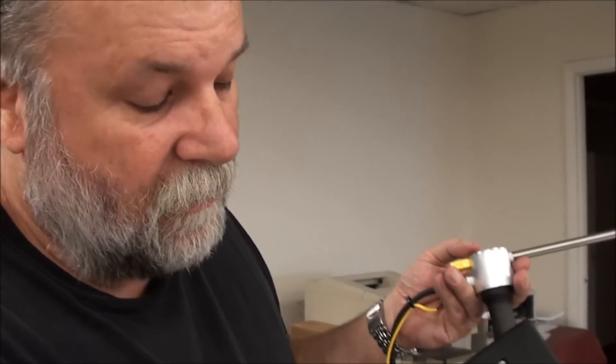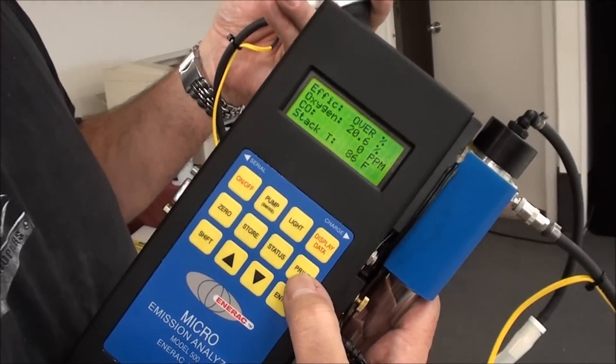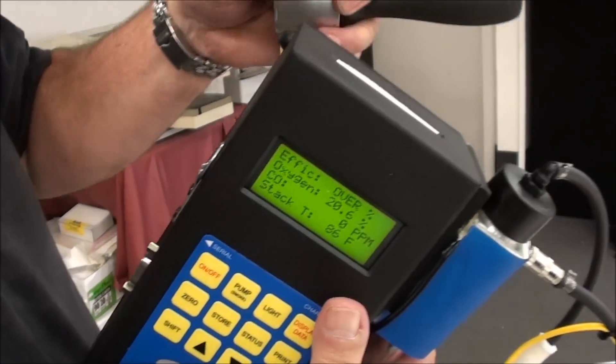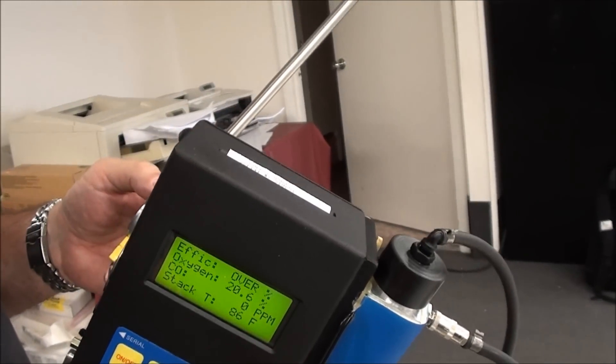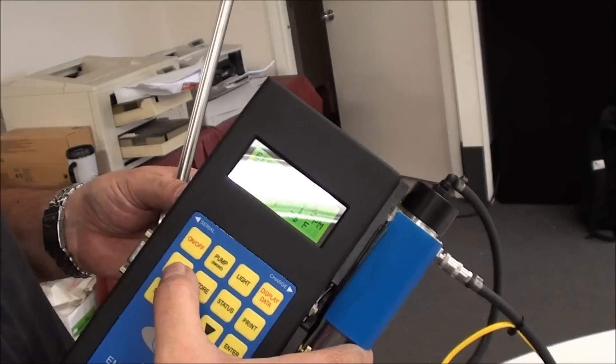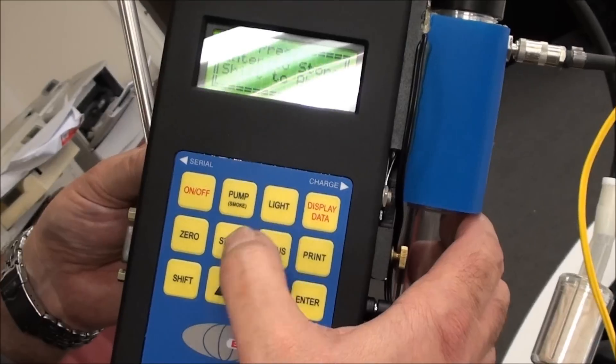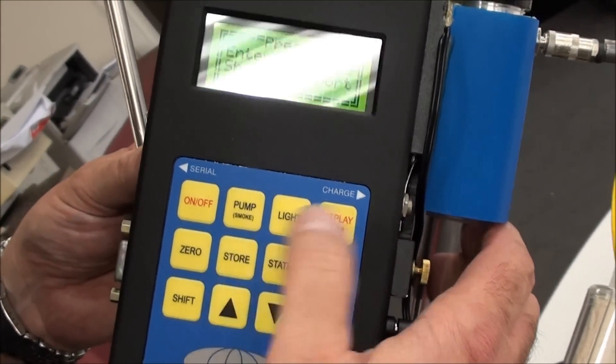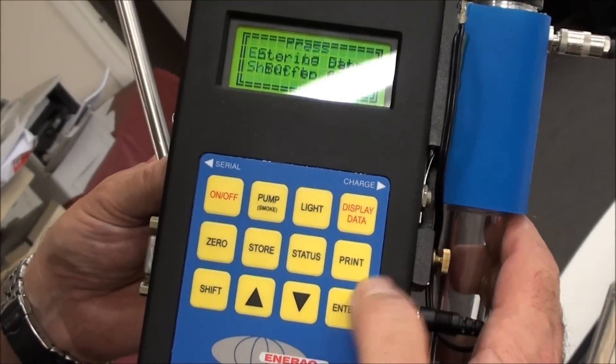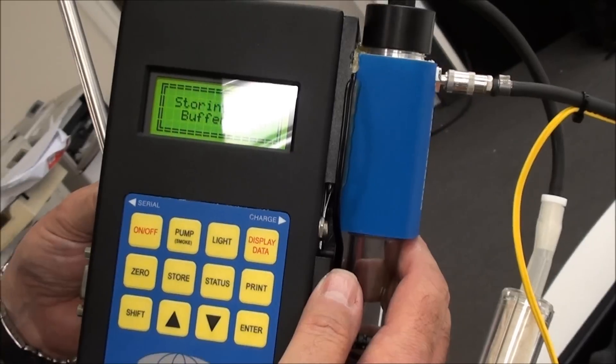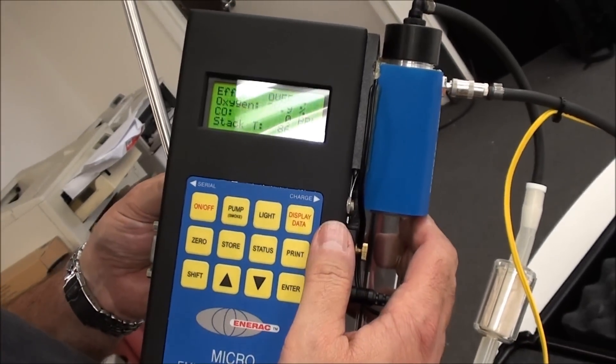You can either print it, you hit the print button, and it prints out the top. It gives you a hard copy, or you can hit the store button. It stores it internally. So once you've done that, hit enter, and it stored the data.